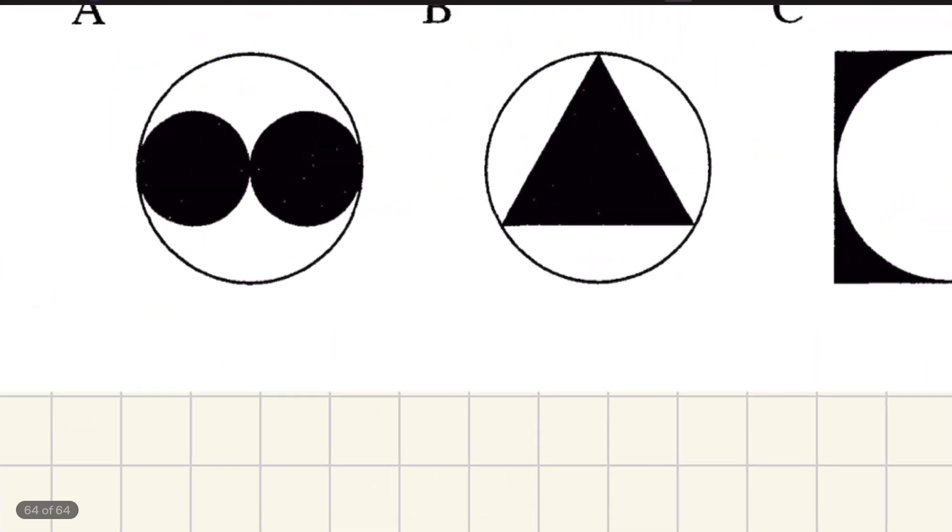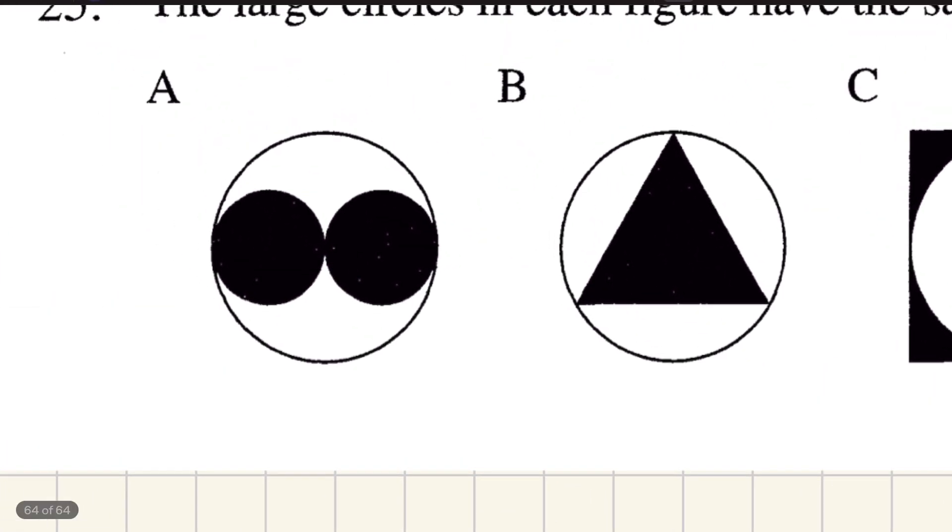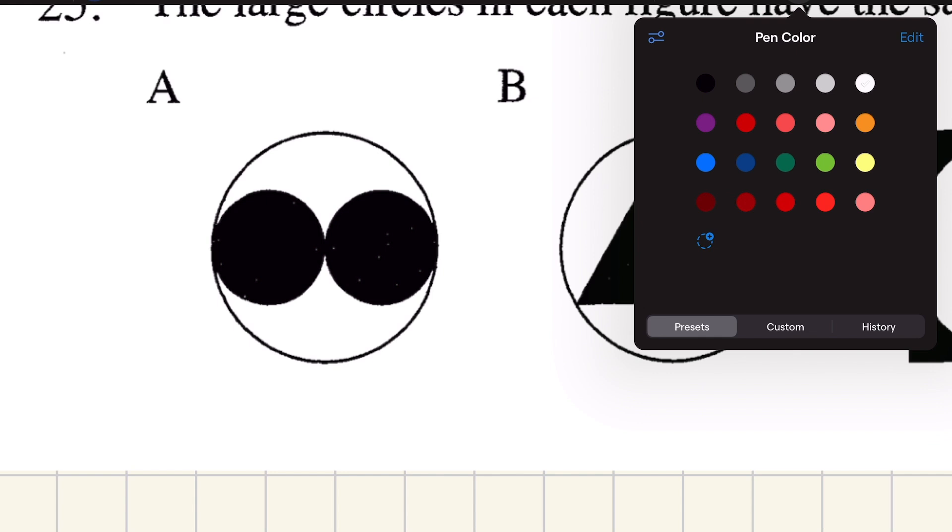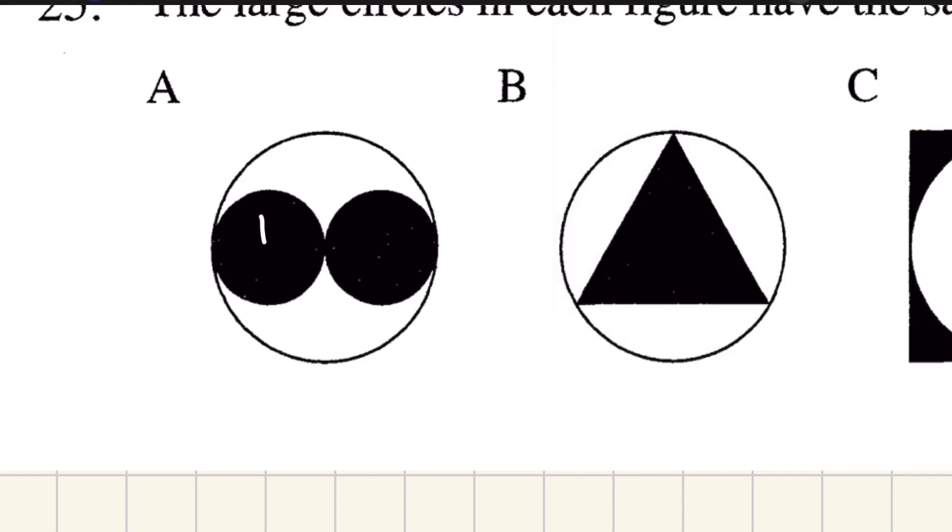So the first thing is we need to actually calculate the fraction of A. We need some sort of baseline to compare it. One of the things you need to have as a good shortcut whenever you're doing these geometry problems is know that when you shrink a shape down by a scale factor half, its area becomes a quarter. This circle, one of these black circles has an area that is a quarter of the other one. So we've got two lots of a quarter.